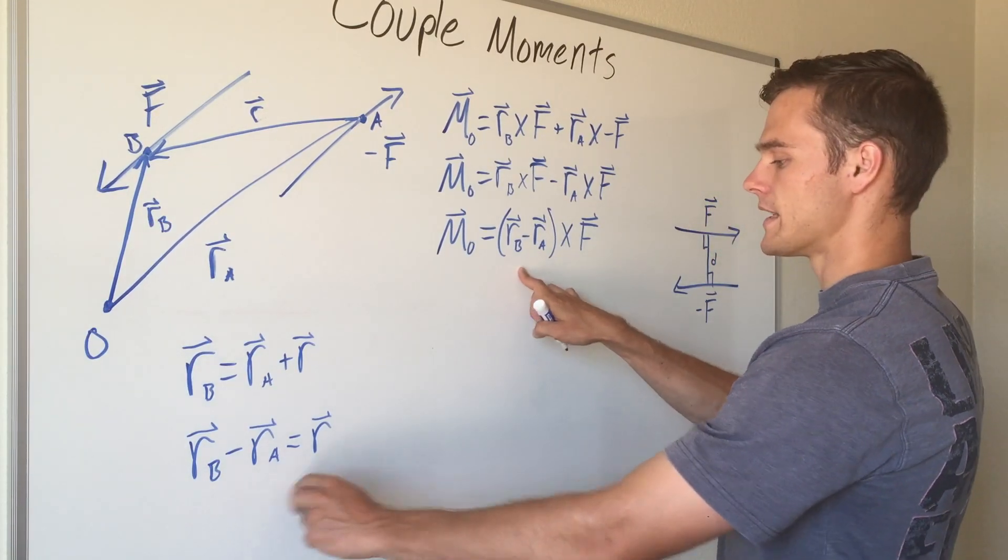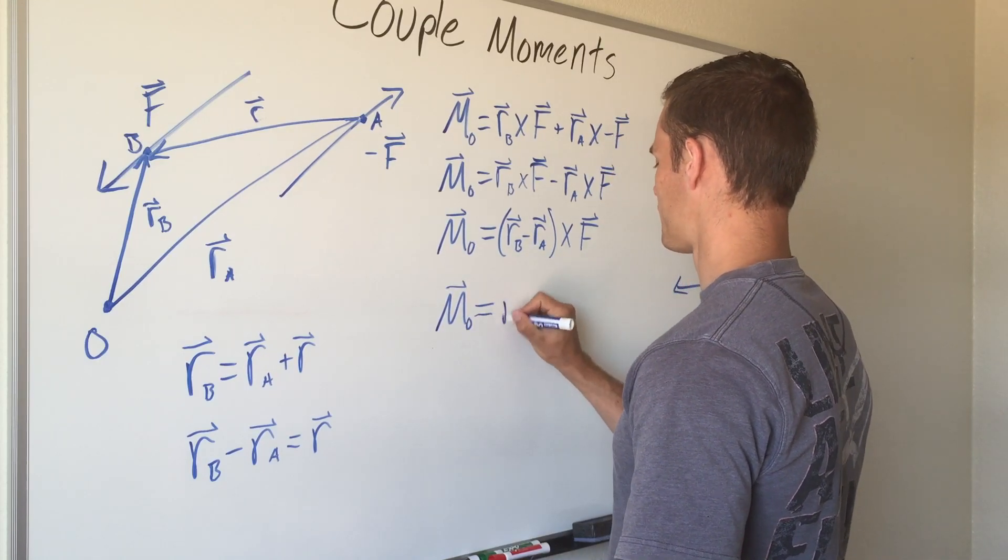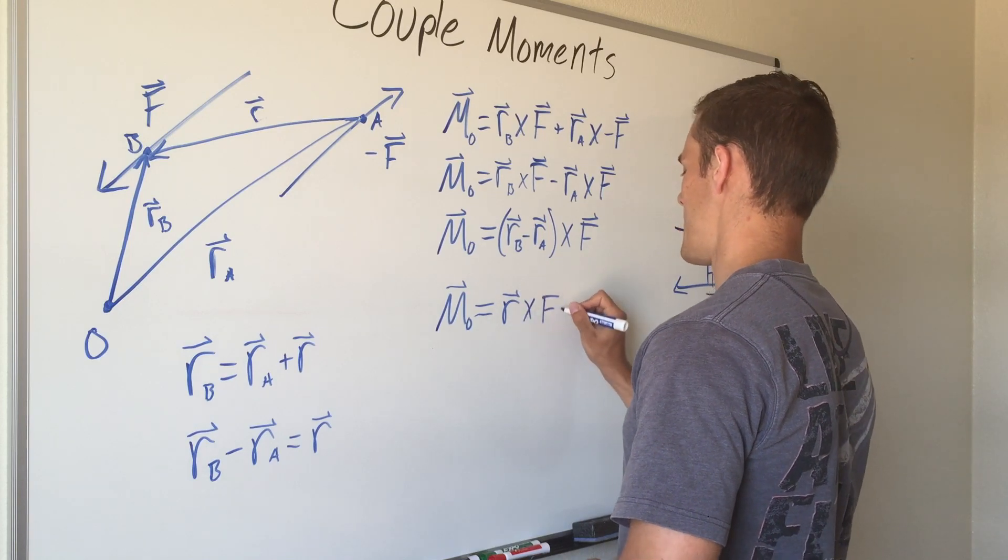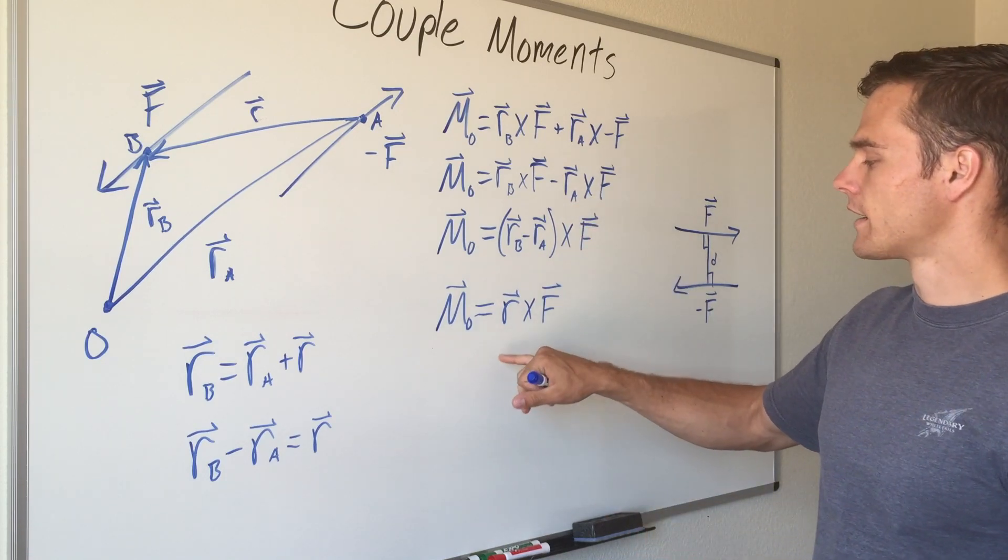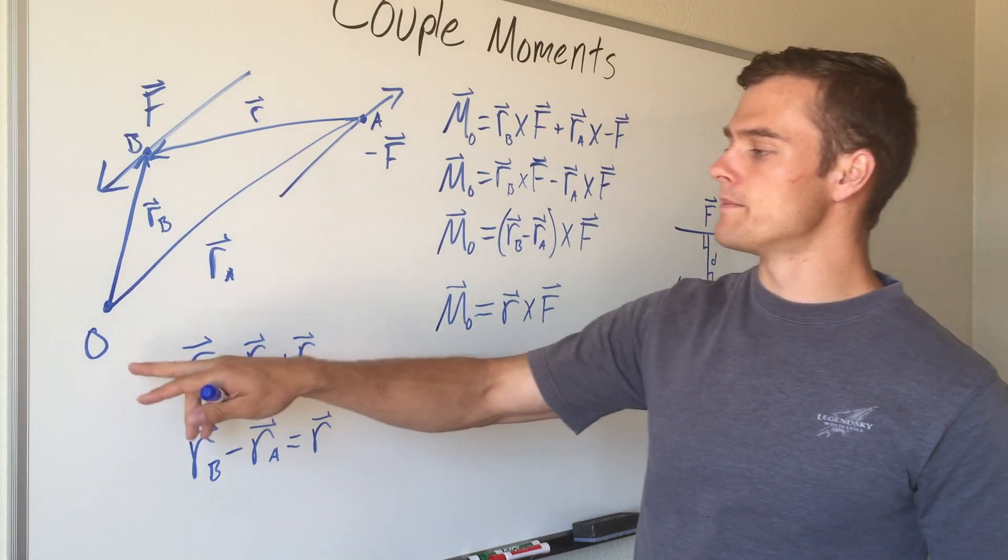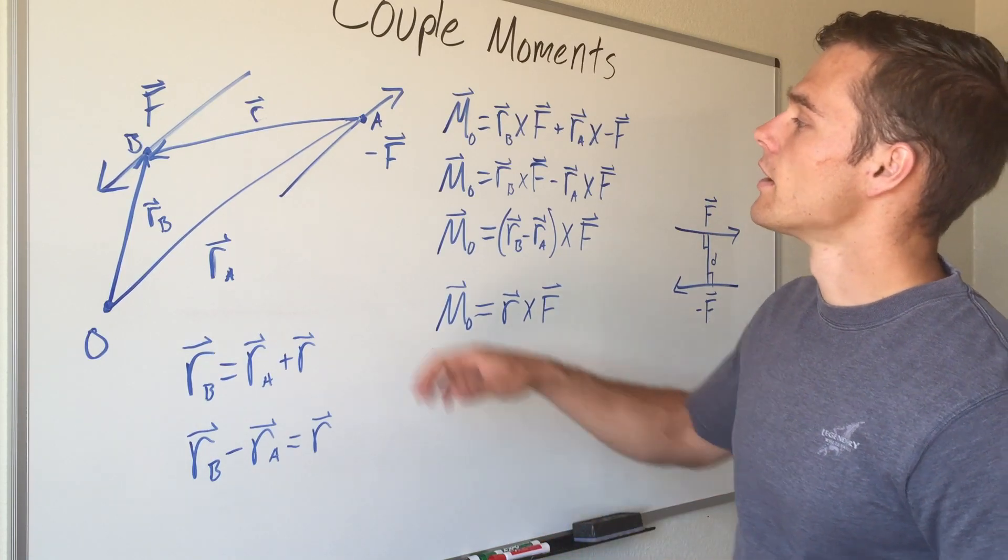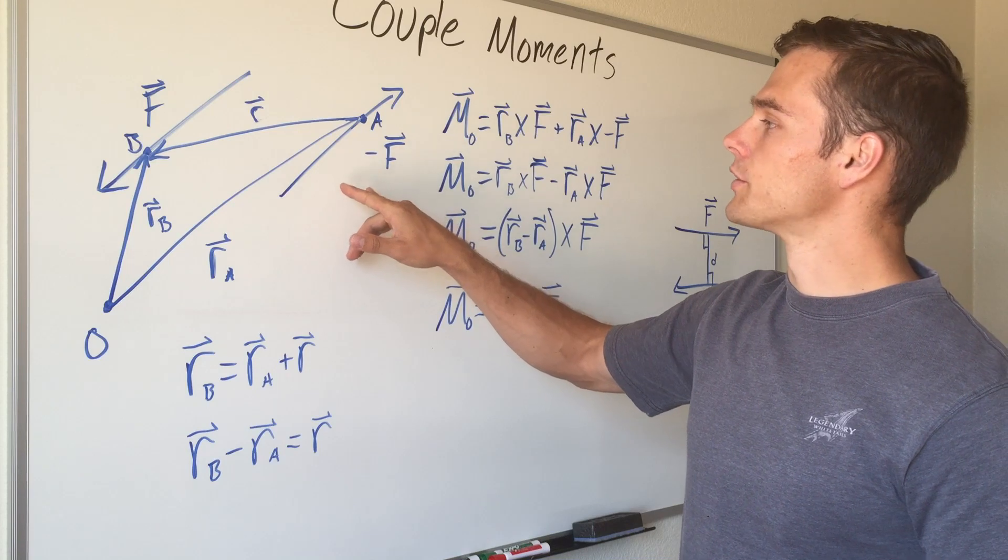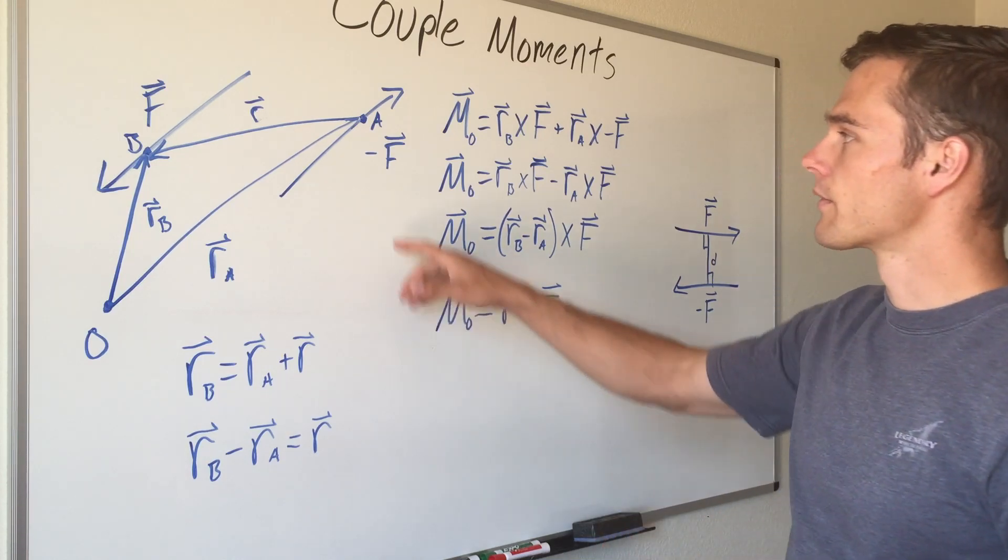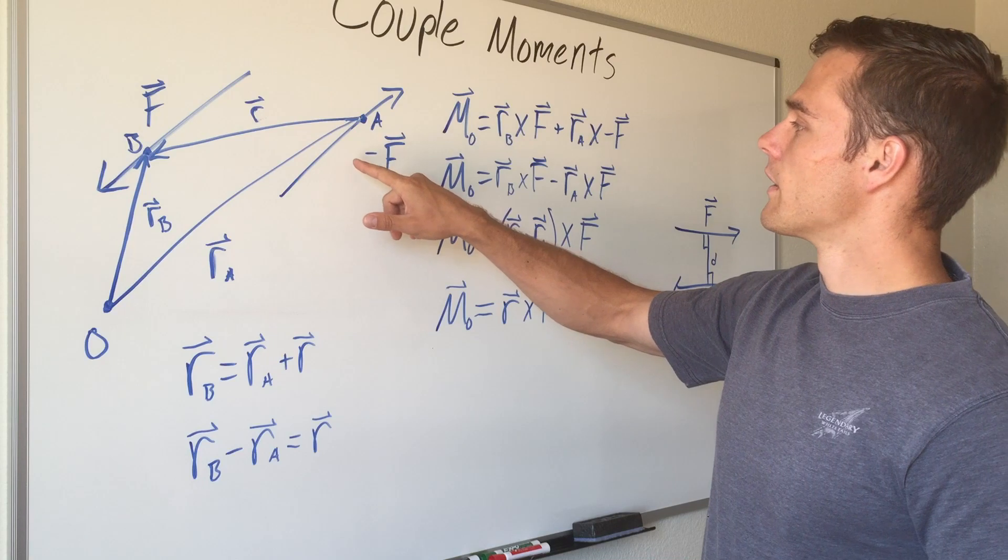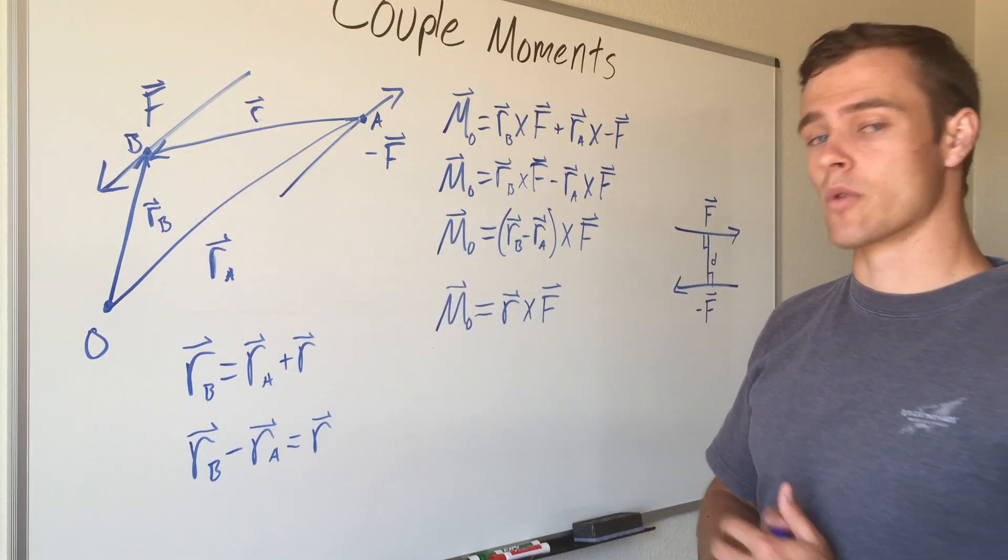Well this is exactly the same as this, so we'll replace it with r and we'll get our moment vector equals r cross F. That's basically what we had to begin with, and this shows us that our moment can be rotating about any point O. It doesn't matter whether it's on or off that object, as long as you have two forces that are parallel to each other, equal in magnitude but going in opposite directions, and you have a position vector going from the line of action of one vector to the line of action of our other force vector. It doesn't matter where those points are.